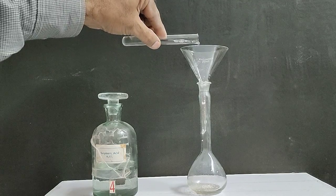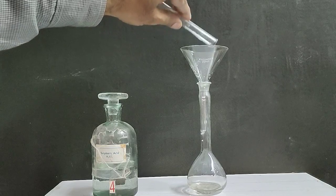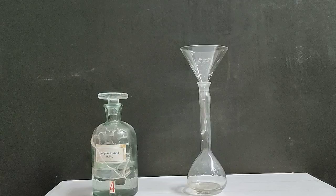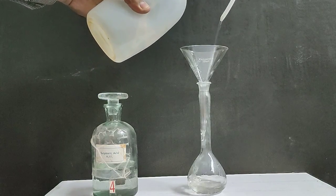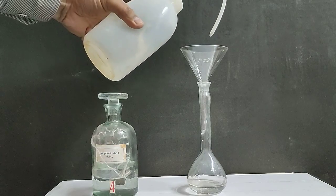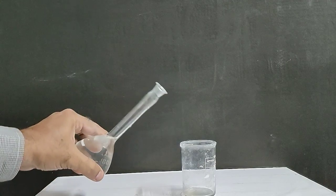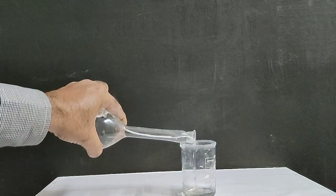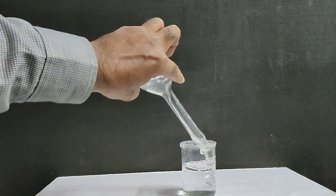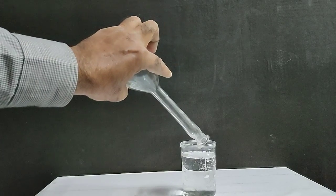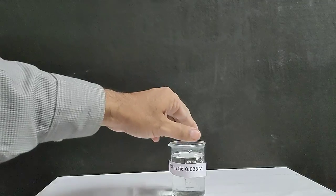Add half test tube dilute sulfuric acid as titration takes place in acidic medium. Add water. Oxalic acid solution with 0.025 M is prepared.